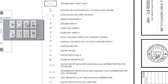Now we are going to review the switches. We have the single pole switch. The next one is the dimmer switch, the one we were reviewing before. This will be the one that changes the intensity of the light.